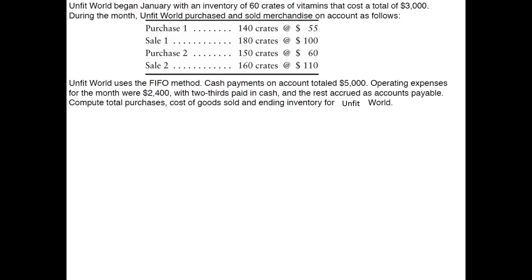Let's try one more — this one has a bit more to it. Unfit World begins January with an inventory of 60 crates of vitamins costing a total of $3,000. During the month they purchased and sold merchandise on account. The first sale was 180 crates at $100 each — that's revenue, which does not appear in the cost sheet. Unfit World uses the FIFO method. Cash payments on account totaled $5,000. Operating expenses were $2,400 with two-thirds paid in cash and the rest accrued as accounts payable. Compute total purchases, cost of goods sold, and ending inventory. Press pause and give this a shot.